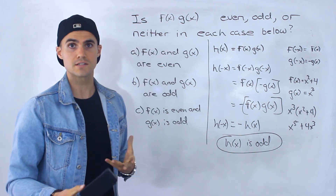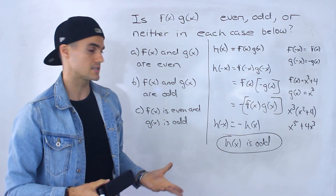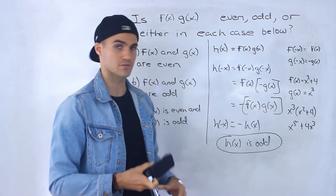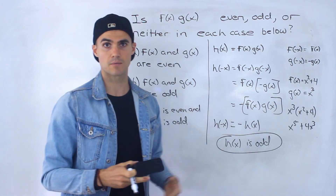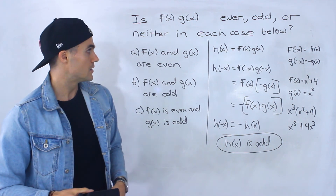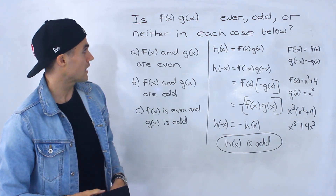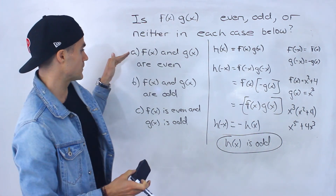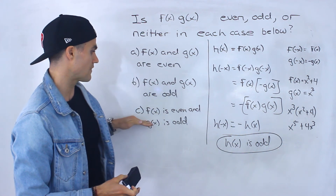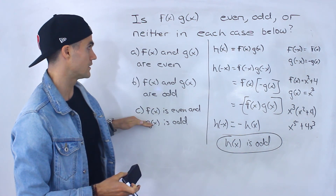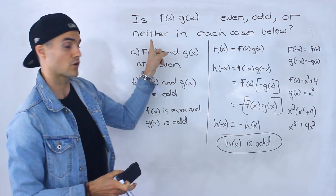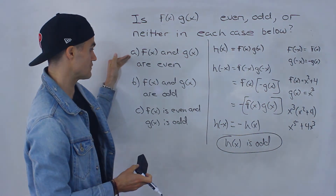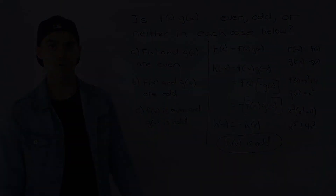You can try these and test the results with different examples — there are many to choose from. For multiplication you end up getting even, even, and then odd. For addition, like in the previous example, it was even, odd, and neither.